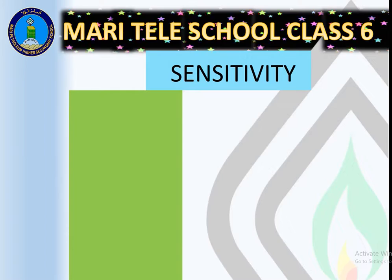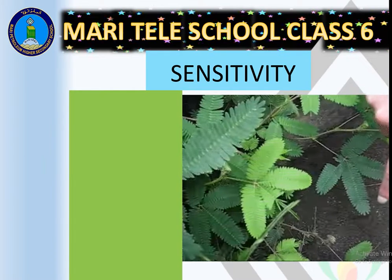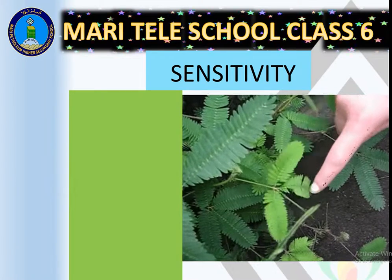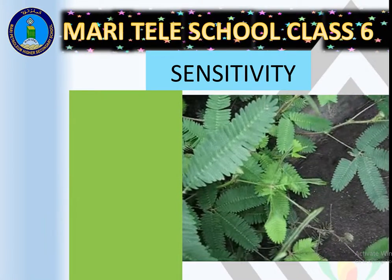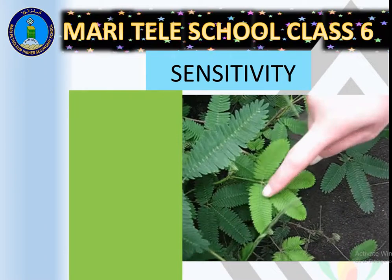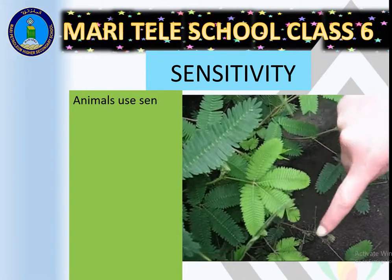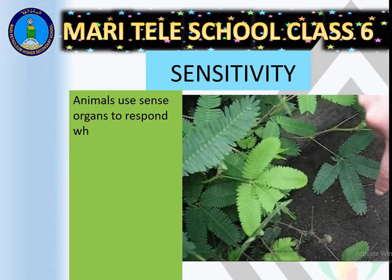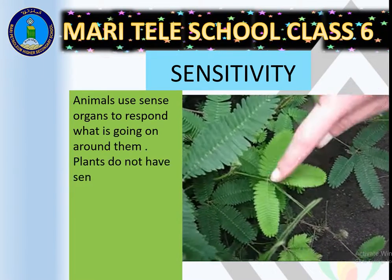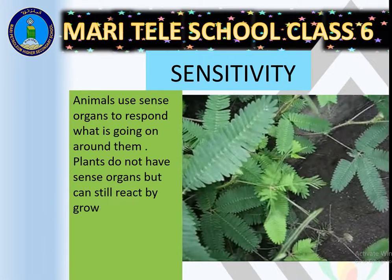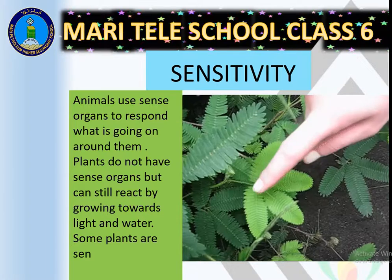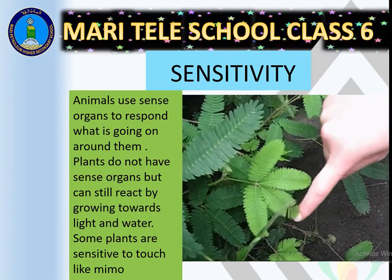Next: sensitivity. For example, the mimosa plant — when you touch its leaves, they fold quickly. Animals use sense organs to respond to what is going on around them. Plants do not have sense organs, but they can still react by growing towards light and water.